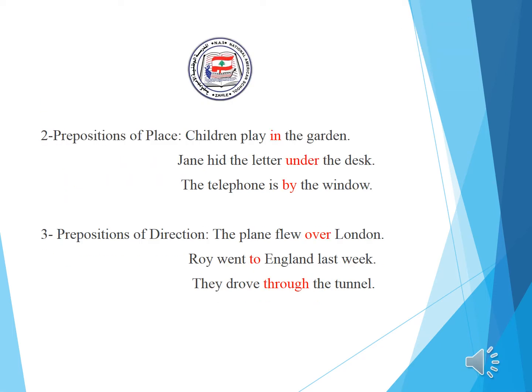Here are some sentences that have prepositions of place. 'Children play in the garden.' In tells us the place where the children play. 'Jane hid the letter under the desk.' Under shows the place where Jane hid the letter. 'The telephone is by the window.' By shows the location of the telephone.